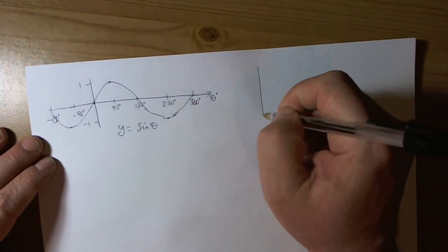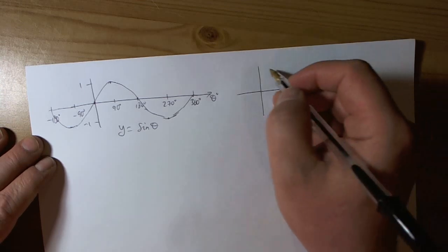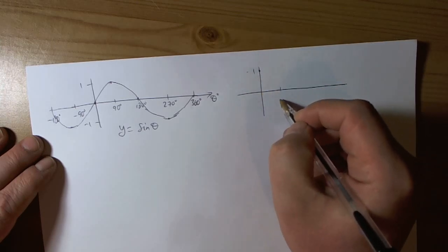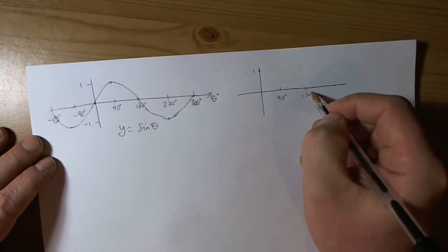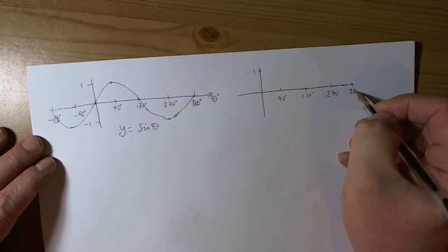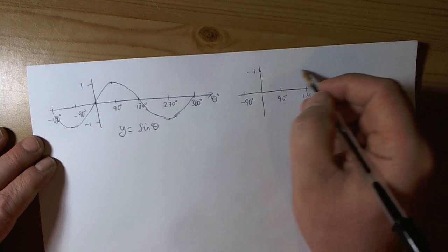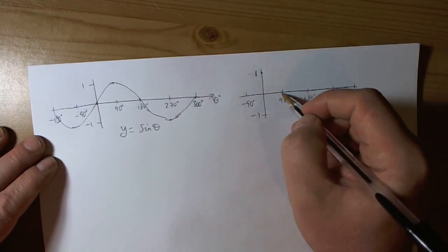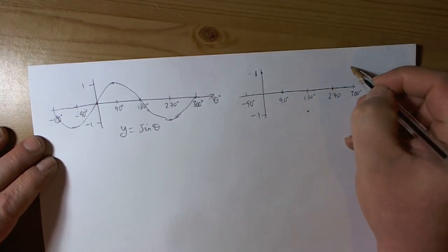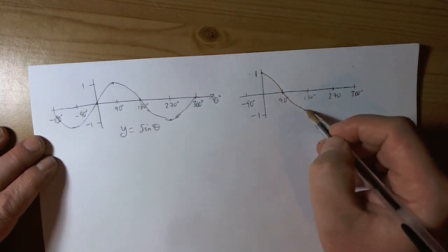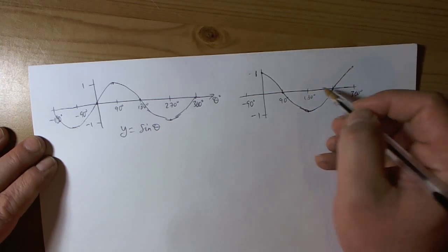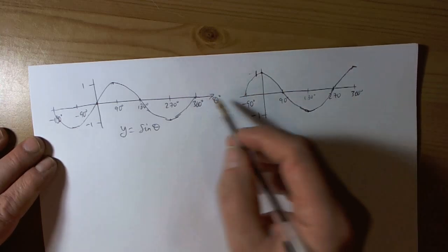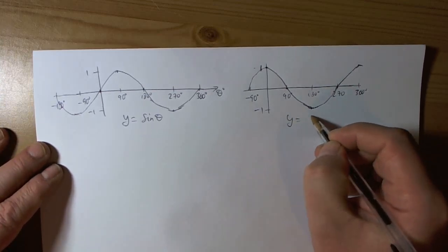And the cosine curve, well it's the sine curve translated by 90 degrees. So the cosine curve starts at 1 on 0 and again looking at the key points 90, 180, 270 and 360. We should recognize the curve just keeps oscillating on forever. The amplitude goes between 1 and minus 1. So this is the cosine curve, y equals cos of theta.